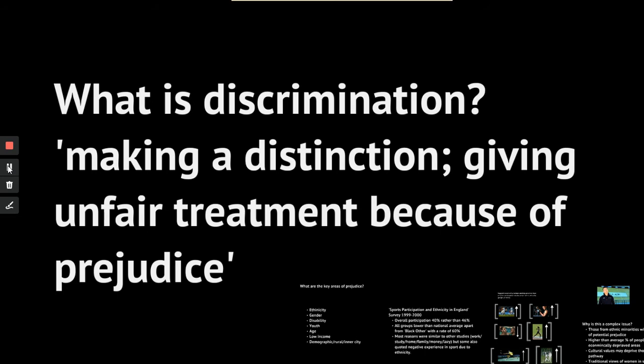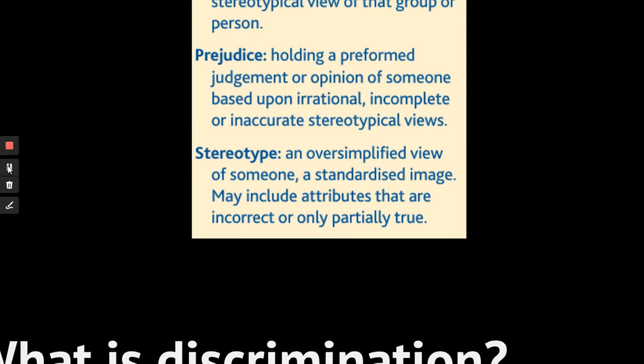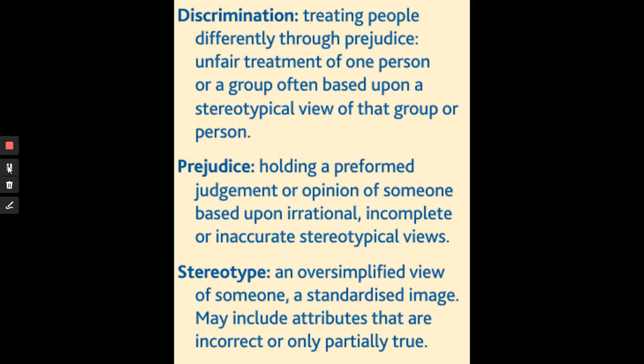Now, discrimination. There are some key phrases we need to be aware of in this topic — lots of AO1 definitions. Discrimination is the idea that there is some sort of unfair treatment of a particular person because of a stereotype or a prejudice. I'm going to start not with discrimination itself, but with the word stereotype, which the definition of discrimination uses as a key phrase, along with prejudice.